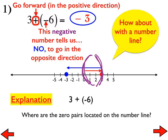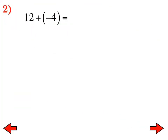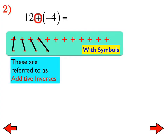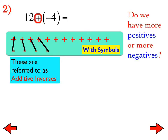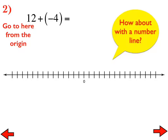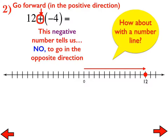Go ahead and do numbers two through five. Number two: 12 + (-4) with symbols. We have 12 positives and four negatives. We can easily see four zero pairs, which leaves us with eight more positive symbols than negative symbols. That's one reason why it's positive eight. With the number line, we start at zero, go out to 12, and then go backward four units, which takes us to positive eight. The zero pairs are found in the overlap — those four zero pairs.